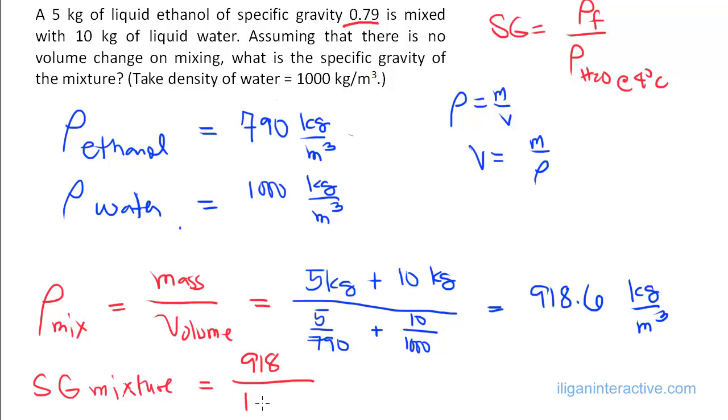It's not really 1000 exactly, but it is 1000. So we will be getting around a 0.92 value for our specific gravity of the mixture, which makes sense because we know that it will be somewhere in between 0.79 and 1 because we are mixing those two liquids. So that's it.